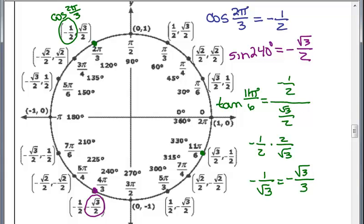So as you can see, the tangent, you have a little bit more arithmetic to work through. The sine and cosine are easy. You just read the x coordinate or the y coordinate.